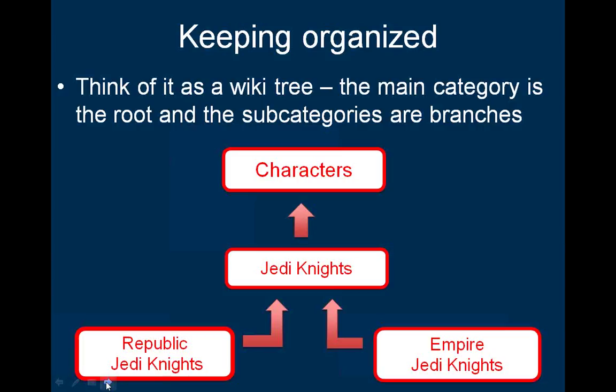Let's use Star Wars as an example. Say you have a category called Jedi Knights, which could be categorized as Characters. Jedi Knights is a very broad category that can be used for almost any time in the Star Wars universe, so you may want to make it more specific. You could create additional categories such as Jedi Knights who lived during the Republic and Jedi Knights who lived during the Empire — both categorized under Jedi Knights, which leads back to Characters. A clear category structure can be the core and most detailed navigational structure your Wiki can have.